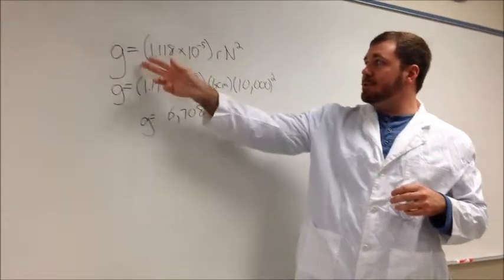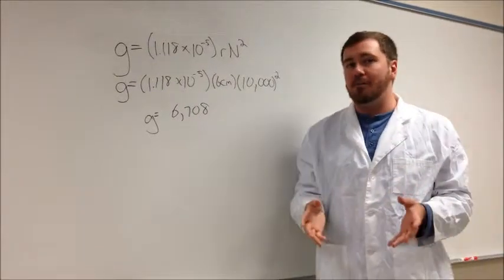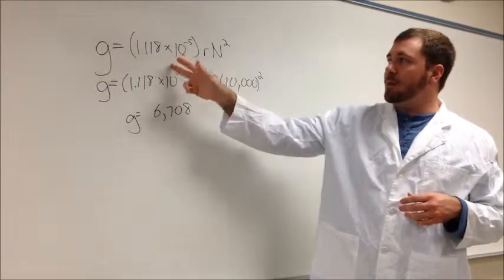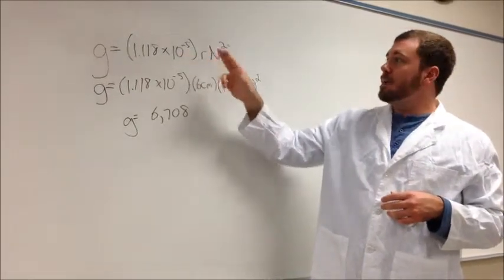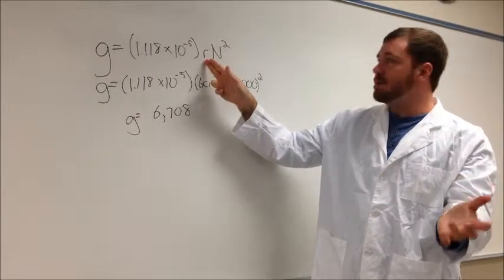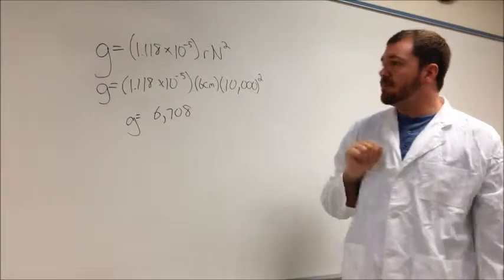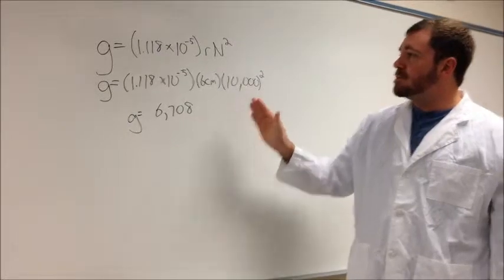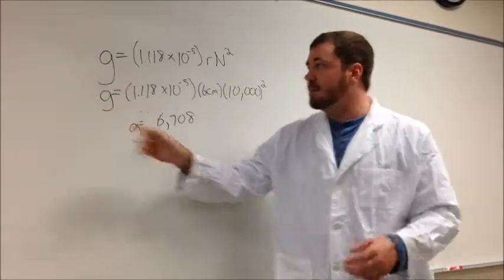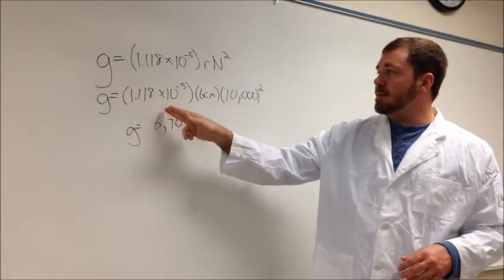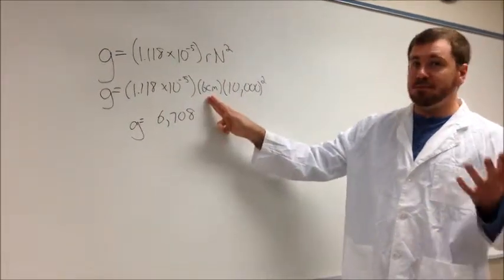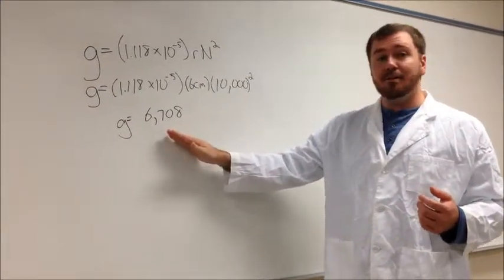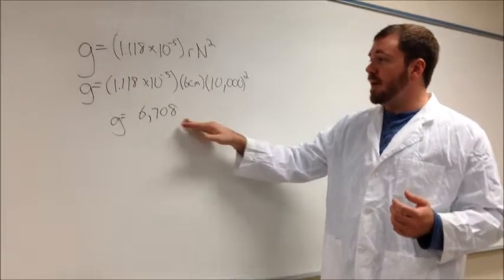So if you do have either times g or RPMs, you can actually solve for that other unknown. In this equation, you have times g equals 1.118 times 10 to the negative 5th times the radius, which is 6 in our case that you measured earlier, times the RPM squared. So let's say you're trying to find times g because your protocol says spin at 10,000 RPMs, but you only have a centrifuge that reads times g. So you times 1.118 times 10 to the negative 5th times the 6 centimeters, which is the radius in our case, times 10,000 squared. So the answer to that would be you can set the centrifuge to 6,708 times g.